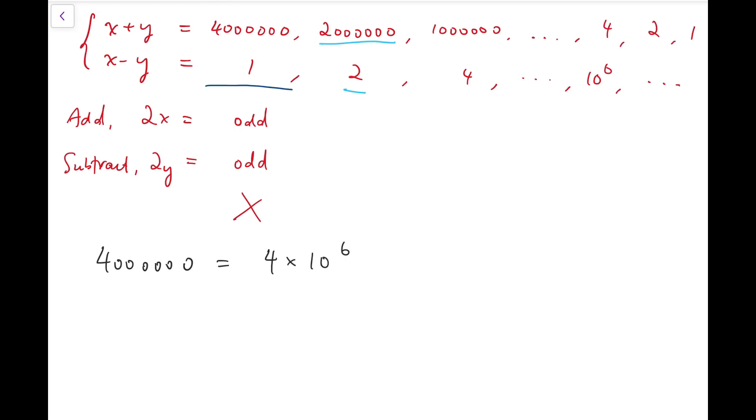Notice that because it's 4 times 10 to the power 6, it's going to be written as 2 squared times 2 times 5 all to the power 6. And simplifying, you'll get 2 to the power 8 times 5 to the power 6.